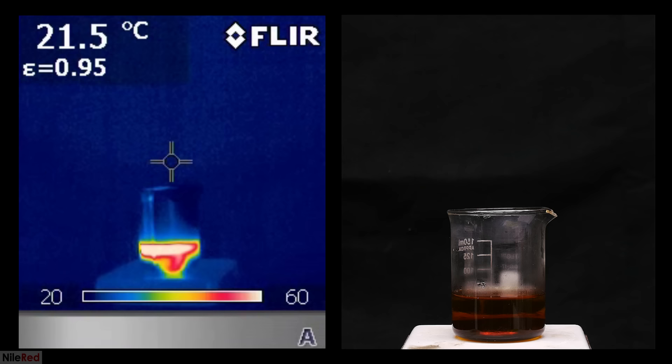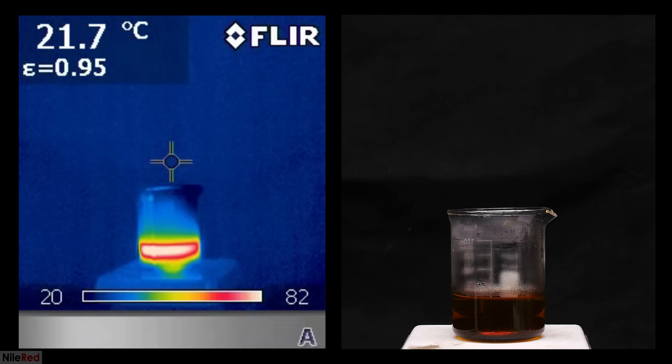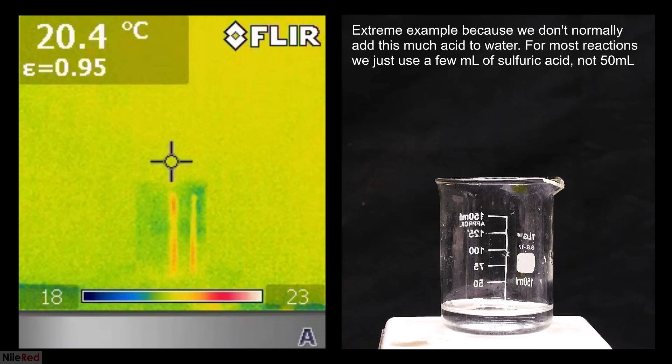Now I'm going to do what you're not really supposed to do, which is pour water into sulfuric acid. The density of the sulfuric acid is much higher, so the water just sits on top. Despite using room temperature water and 93% sulfuric acid, the temperature still goes to a nice 86°C. If I were to use warm water and concentrated 98% sulfuric acid, things probably would have boiled.